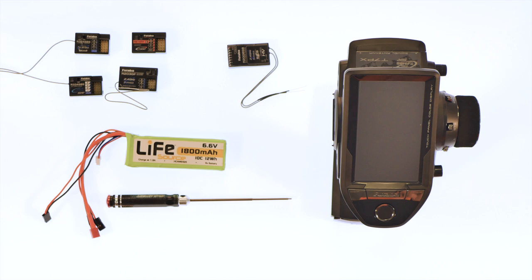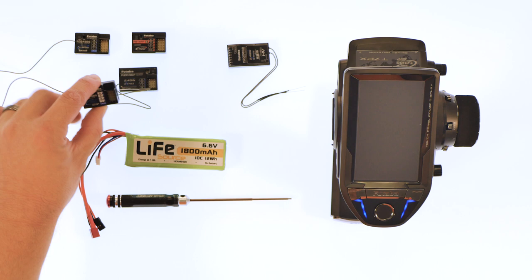Now we're going to show you how to bind your receivers to your 7PX radio. There are four different styles of receivers available for your transmitter. Let's start with the one that comes with the transmitter.